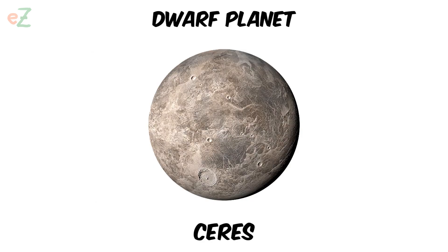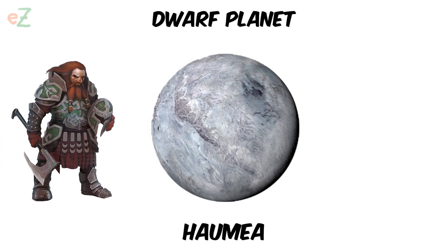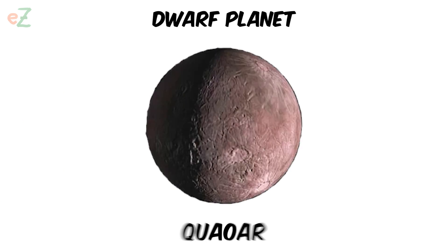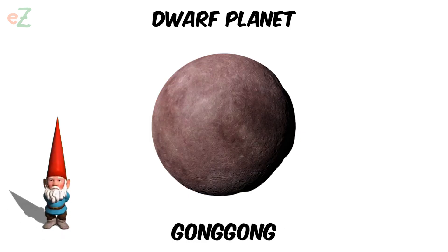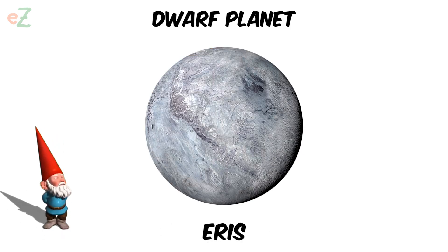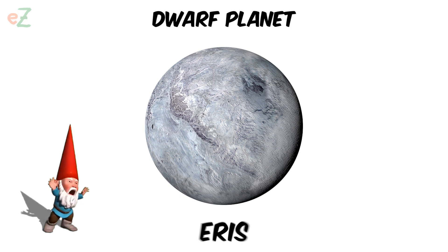Dwarf planet. Objects that are round and orbit the sun, just like planets do. But unlike planets, dwarf planets are not able to clear their path around the sun. That means there are other objects orbiting at roughly the same distance from the sun.